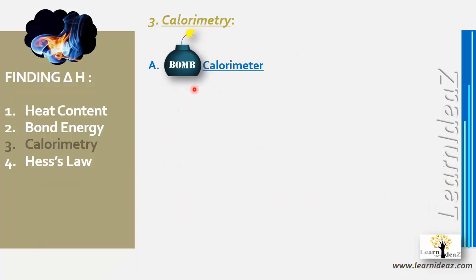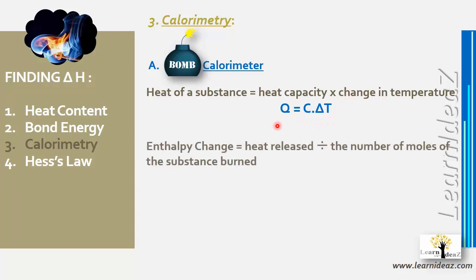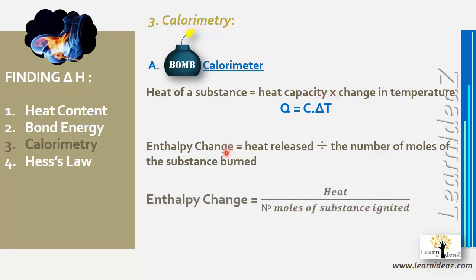The heat of a substance is: q = c × delta t. The enthalpy change delta h equals the heat released divided by the number of moles of the substance burned: delta h = −q / n = −c × delta t / n. The negative sign indicates the reaction is exothermic.